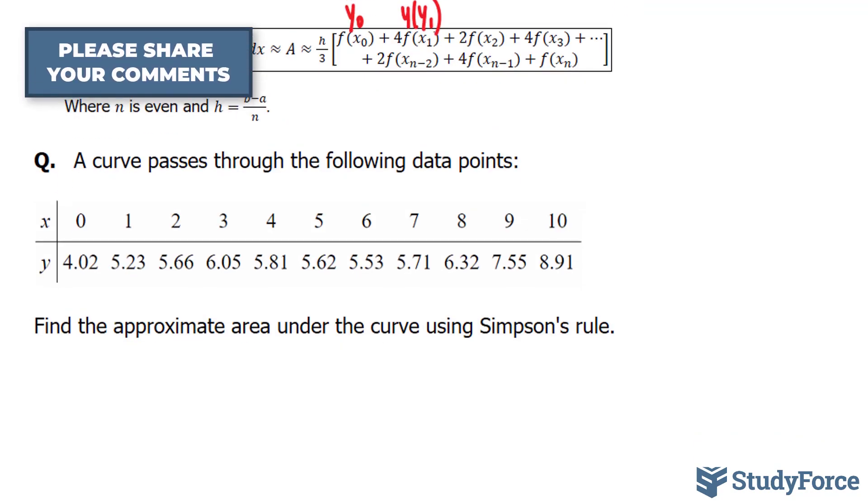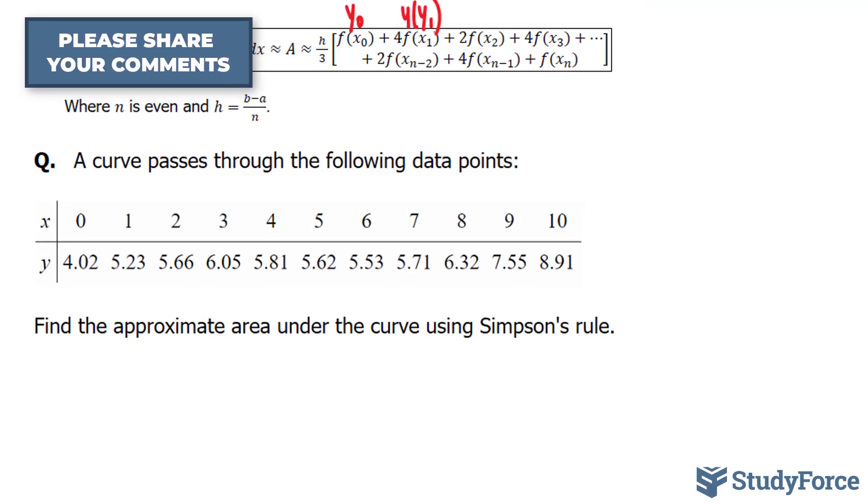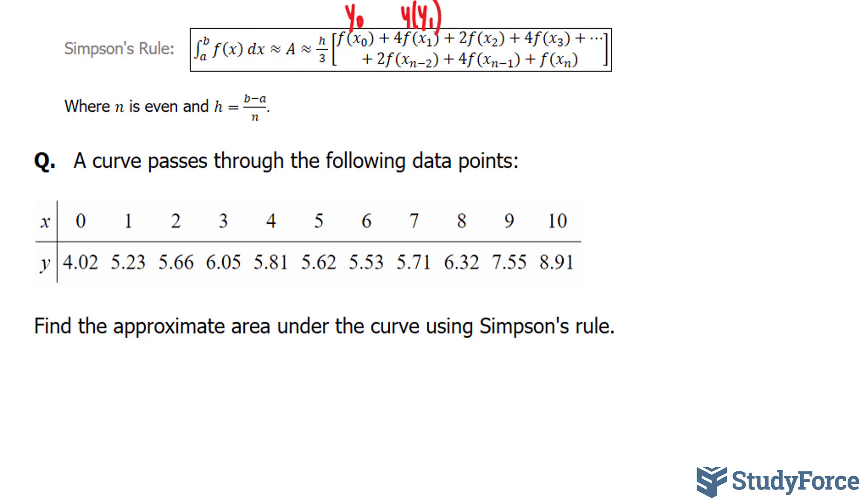The question reads: a curve passes through the following data points shown in this table. Find the approximate area under the curve using Simpson's rule. As mentioned earlier, h here equals 1, so we don't have to worry about that.